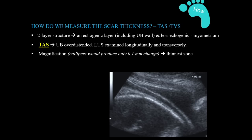There are two options for measuring the lower uterine segment scar: transabdominal or transvaginal scan. The lower segment scar thickness is a two-layered structure. Via the transabdominal approach, the bladder should be overdistended. A large view of the lower uterine segment in the midsagittal section is obtained, then the image is magnified to focus specifically on the lower uterine segment.